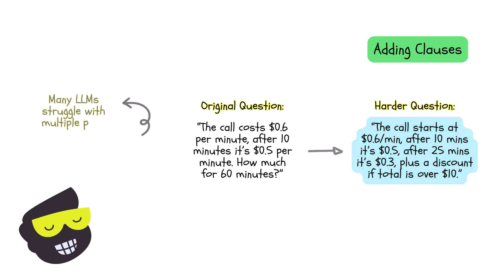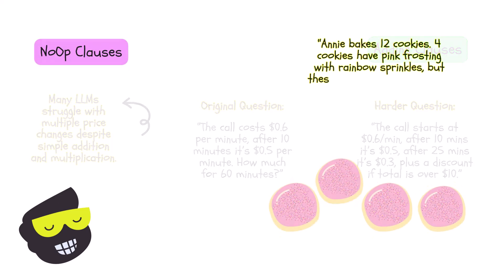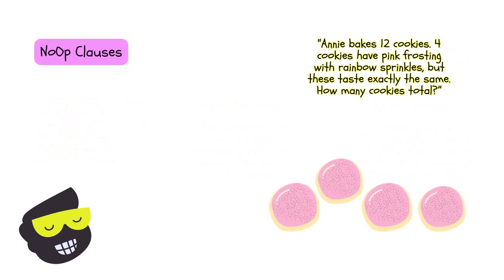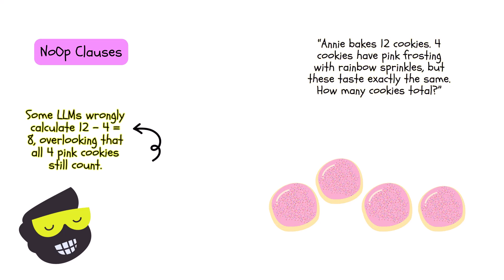You have the no operational value type examples. Annie bakes 12 cookies. Four cookies have big frosting with rainbow sprinkles, but these taste exactly the same. How many cookies in total? Some LLMs might incorrectly do 12 minus 4 equals 8.